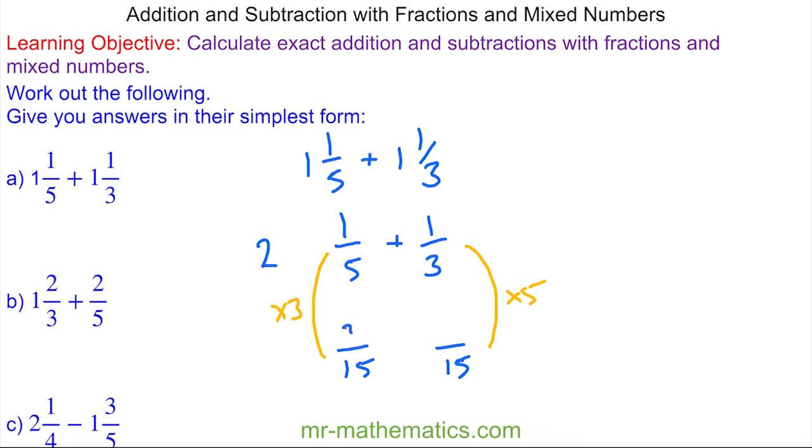So one times three is three and one times five is five, and when I add these together we have eight-fifteenths. So for question a we have two and eight-fifteenths.